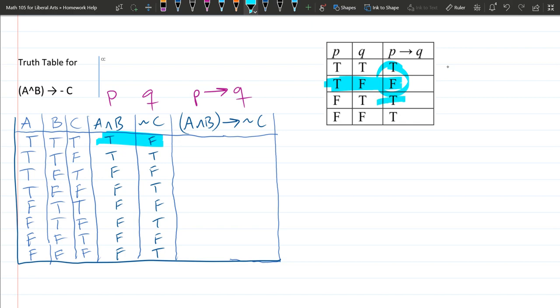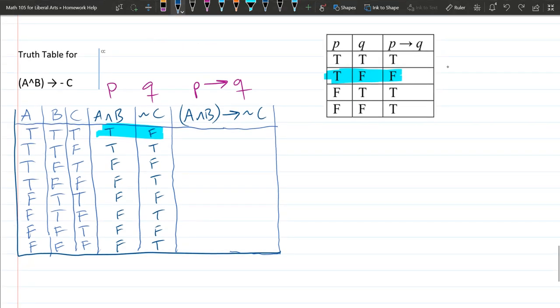All the other combinations are true, true, true, or true. So this true, false is the only one that makes our implication false. All the other ones—we had true, true, which is true, true, and so the implication is true.